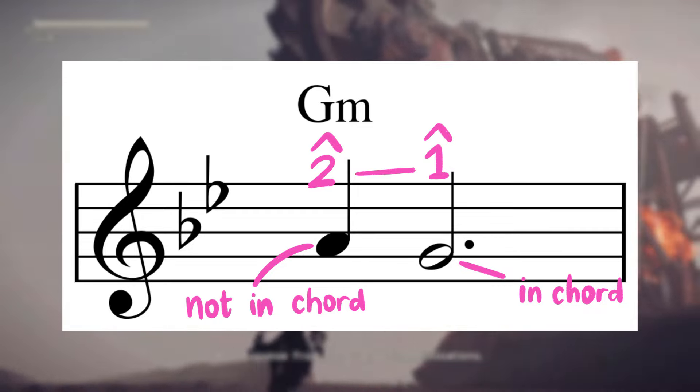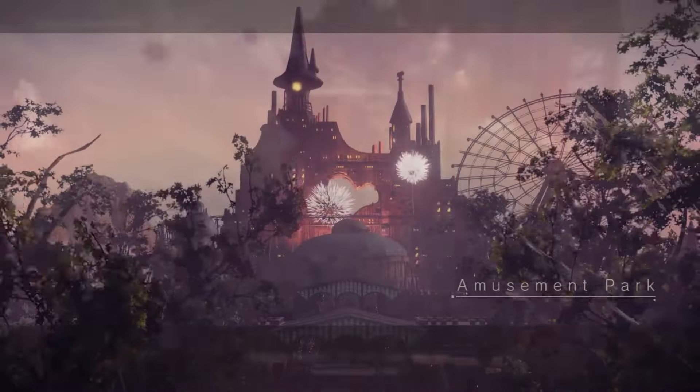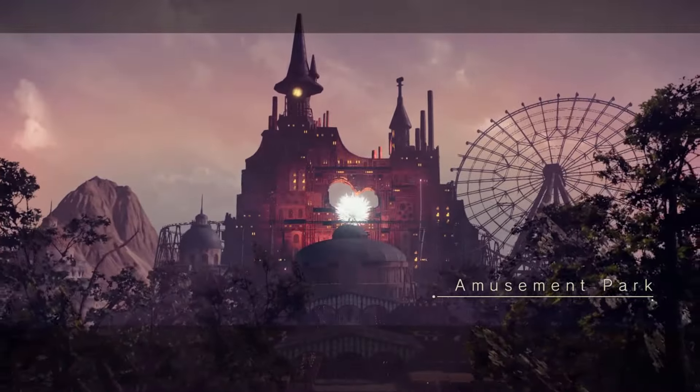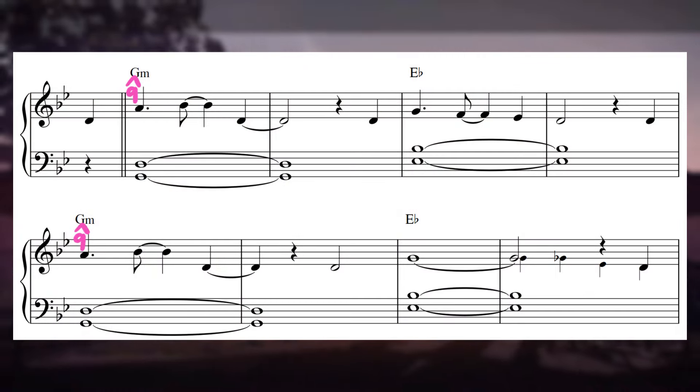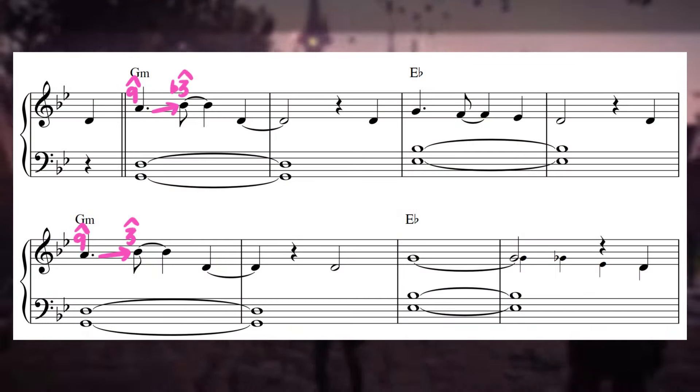Check out the track Amusement Park from Nier Automata, where the melody opens with a big 9th on beat 1, the A over a G minor chord that resolves up to the 3rd, B flat.